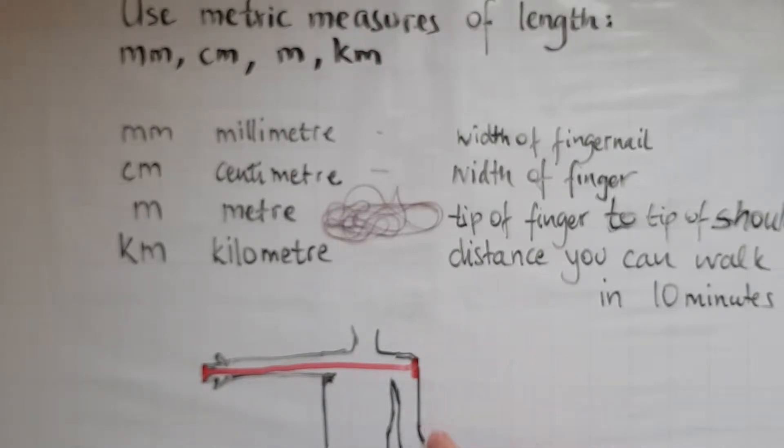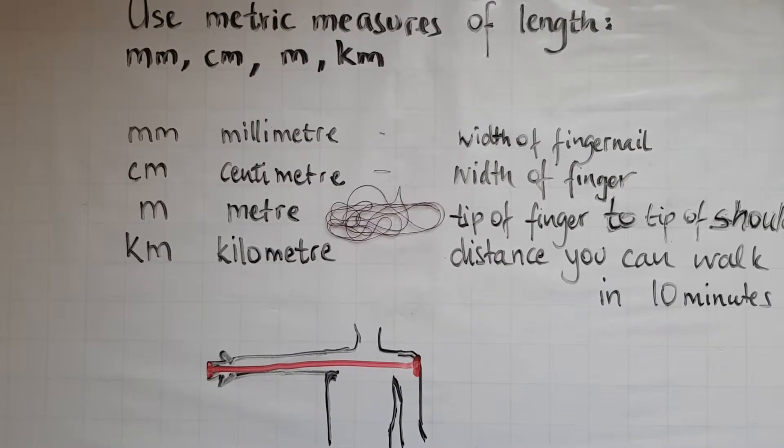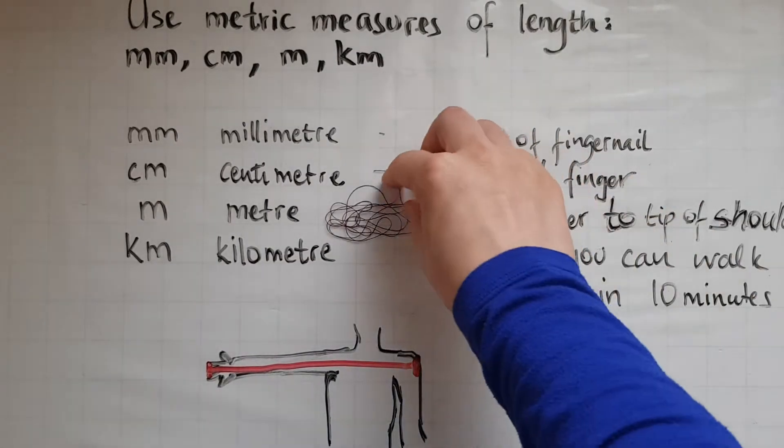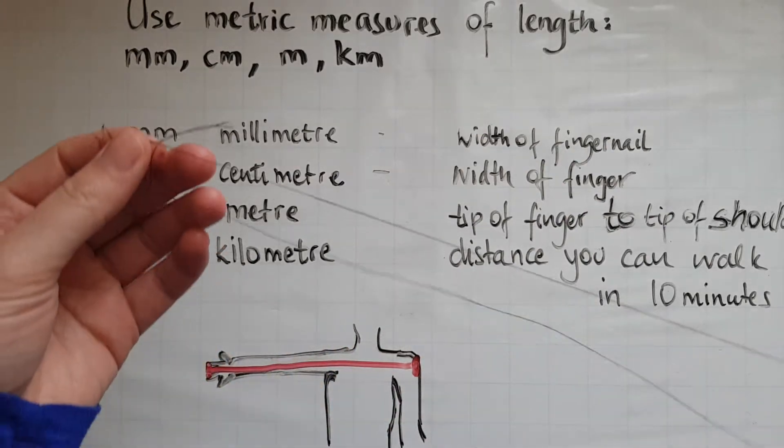So this is the shoulder, this is one arm and this is the other. So from the tip of the finger on one side to the shoulder on the other side, that is how long about is a meter. So I've tried to cut this string that is one meter long.